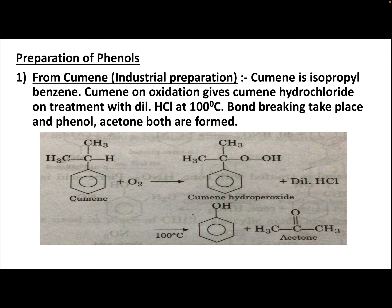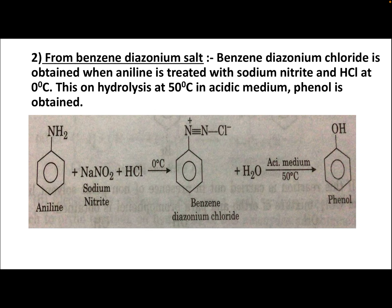Next, preparation of phenol. The first method is from cumene, which is the industrial method. Cumene is isopropyl benzene — a benzene ring with an isopropyl group attached. Cumene on oxidation gives cumene hydroperoxide. On treatment with dilute HCl at 100°C, bond breaking takes place and phenol and acetone are formed. This is the industrial method of preparation of phenol.